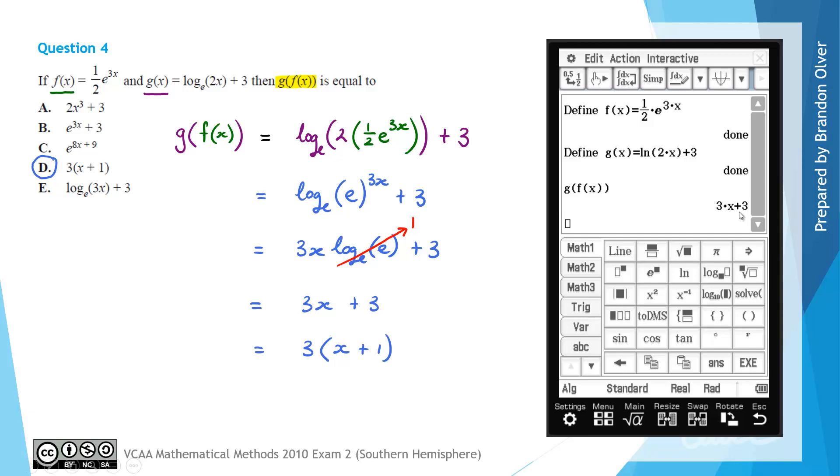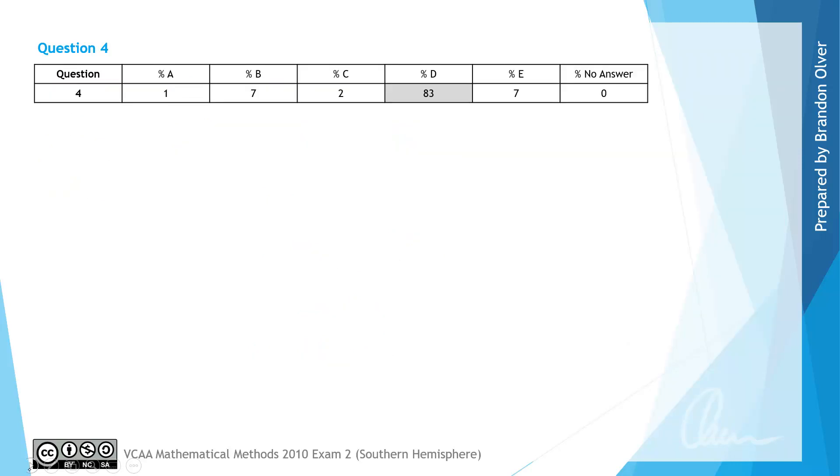But as you can see, it was much faster to do that question using a calculator. And just quickly before we wrap up, we can see from the examiner's report that the question was well done in the exam with 83% of students getting option D the correct answer for that question.